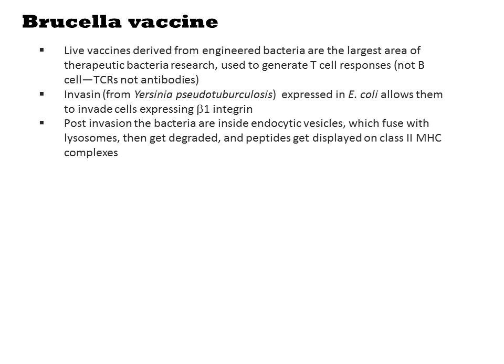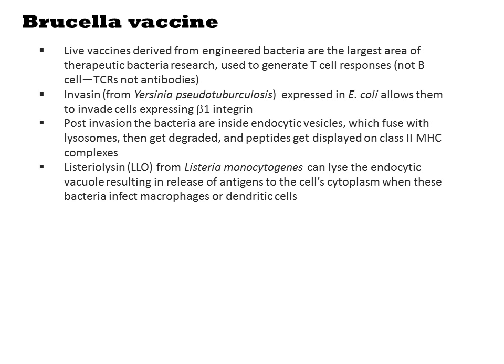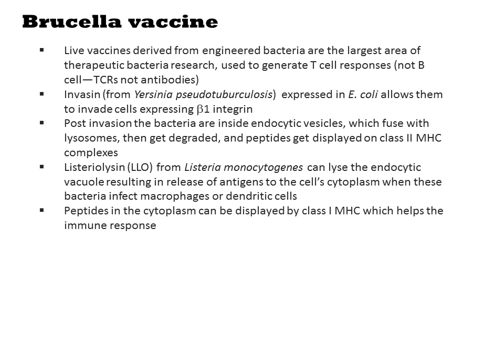Post-invasion, the bacteria are inside endocytic vesicles which fuse with lysosomes, then get degraded, and peptides get displayed on class 2 MHC complexes. If you also put Listeria lysin, or LLO from Listeria monocytogenes, into the bacteria, they will lyse the endocytic vacuole, resulting in release of antigen to the cell cytoplasm when these bacteria infect macrophages or dendritic cells. Peptides in the cytoplasm can be displayed by class 1 MHC, which can then elicit cytotoxic T cell responses.